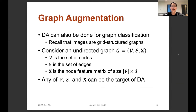Data augmentation can also be done for graph classification. It is based on the observation that every image is a grid-structured graph, so image classification corresponds to graph classification. We can consider an undirected graph G consisting of the set of nodes V, the set of edges E, and the node feature matrix X. Then any of V, E, and X can be the target of data augmentation.